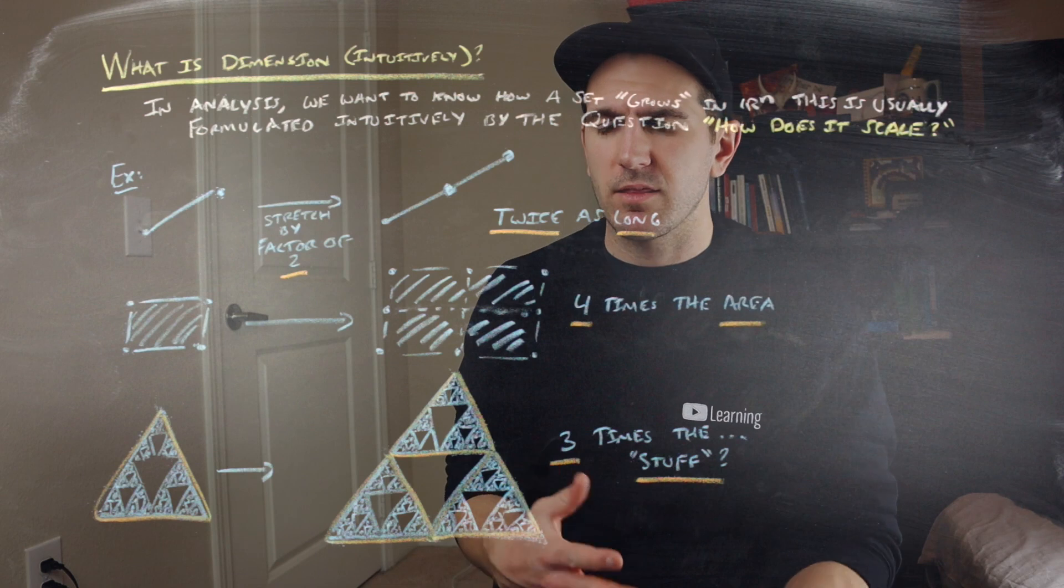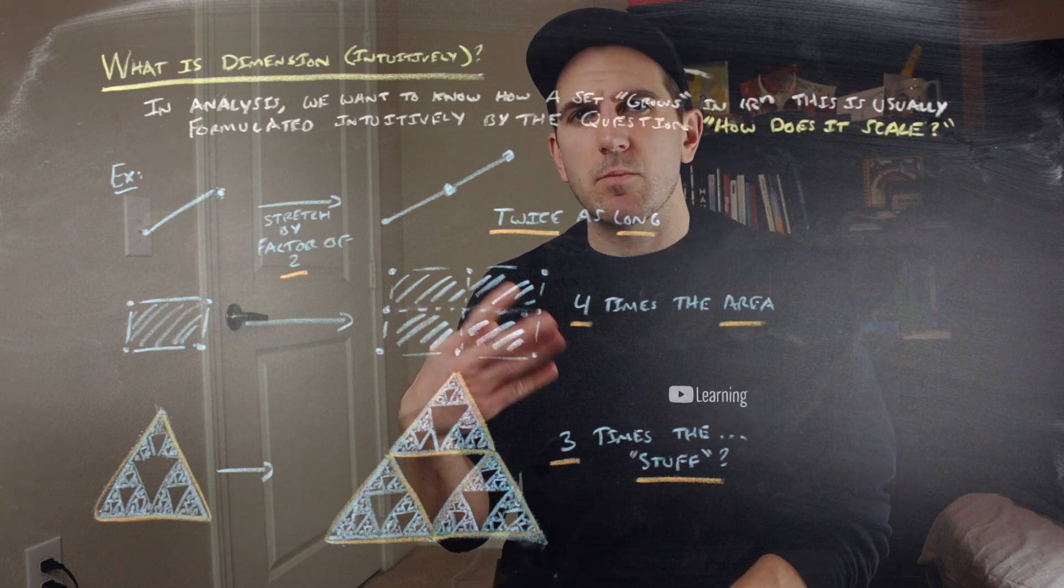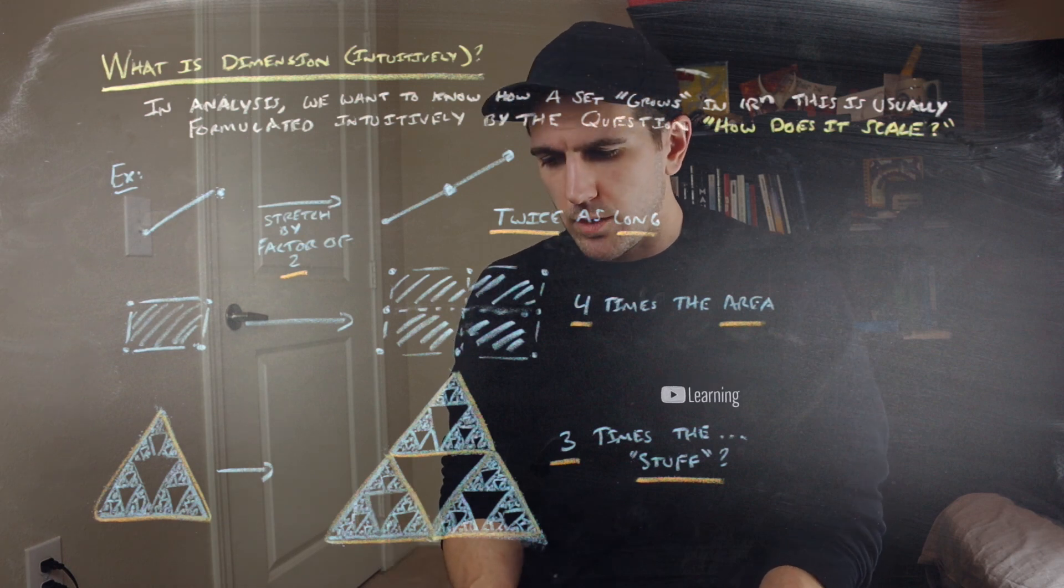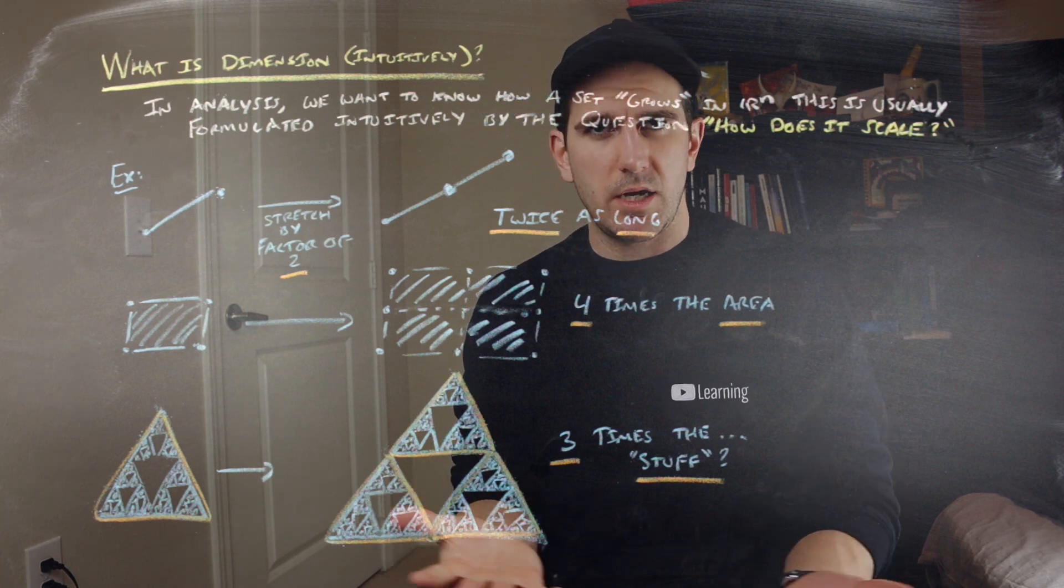And lastly, if you go ahead and look at Sierpinski's triangle and scale that up by a factor of two, you're going to get three Sierpinski's triangles, which is three times the stuff. What is going on with that?